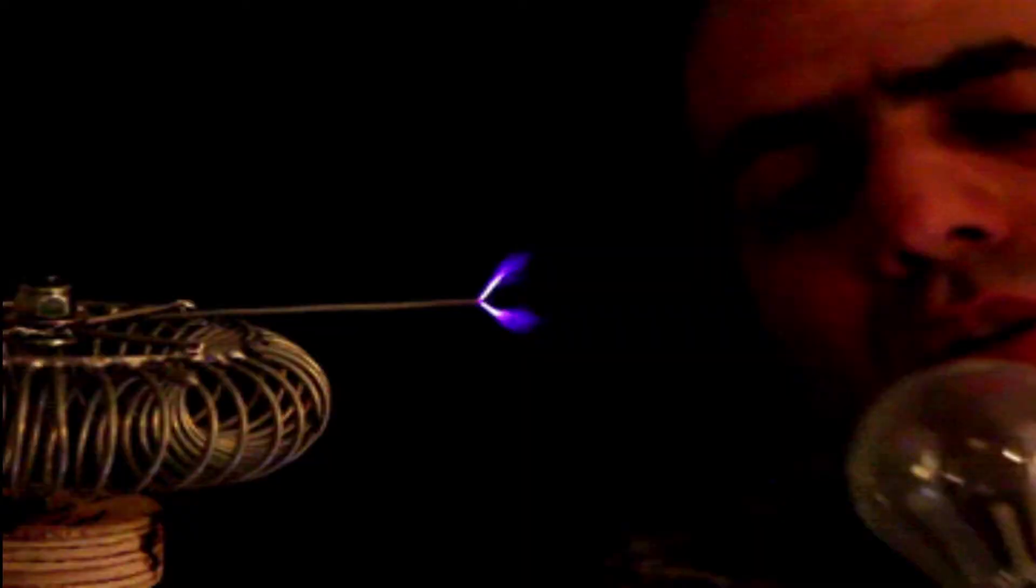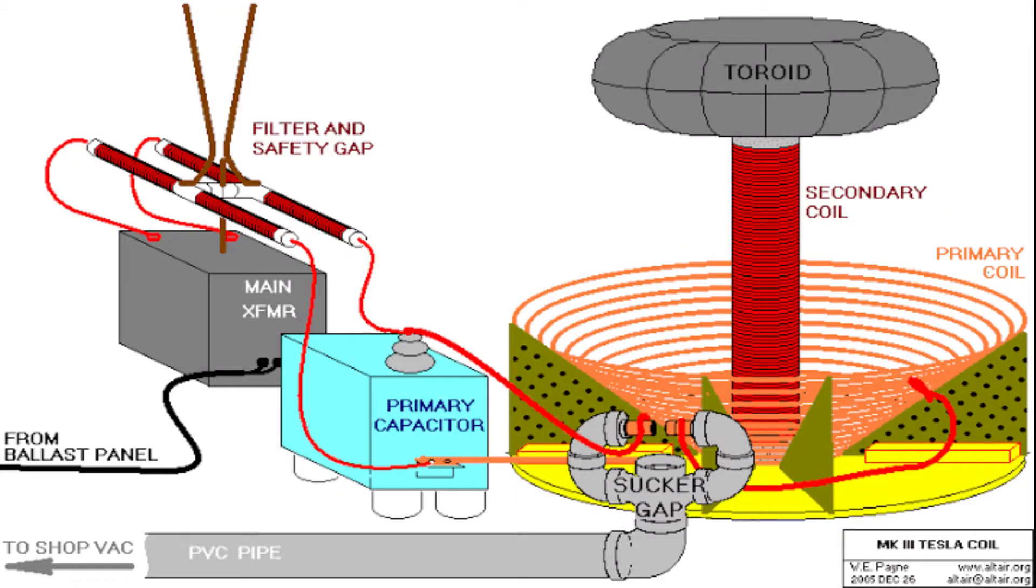The Tesla coil was a truly revolutionary invention. Early radio antennas and telegraphy used the invention, but variations of the coil can also do things that are just plain cool, like shoot lightning bolts, send electric currents through the body, and create electron winds.